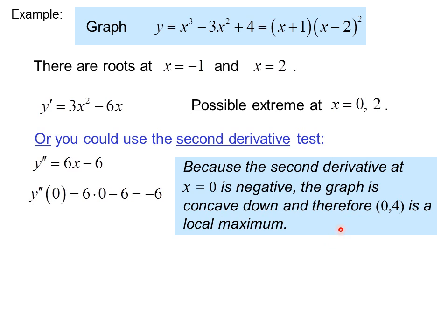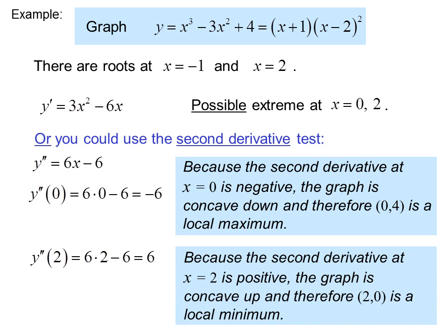Picture the graph — it goes up and back down, and because it's concave down there must be a maximum there. Plugging 2 into the second derivative, y double prime of 2 equals 6, which means it's concave up. Therefore there must be a local minimum: since the second derivative at x equals 2 is positive, the graph is concave up and (2, 0) is a local minimum.